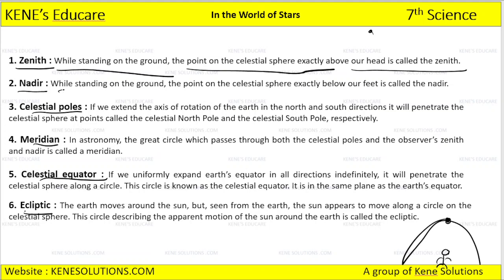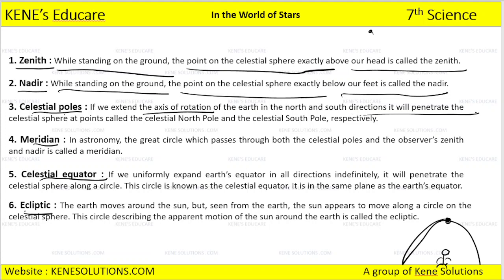What is the nadir? While standing on the ground, the point on the celestial sphere exactly below the feet is called nadir. What is the celestial pole? If we extend the axis of rotation of the earth in the north and south directions, it will penetrate the celestial sphere at a point, and those points are called the celestial north pole and celestial south pole.